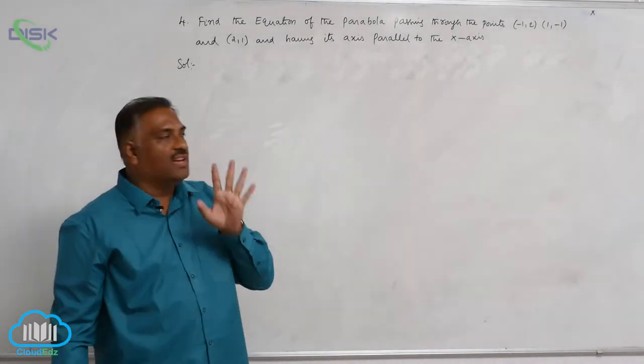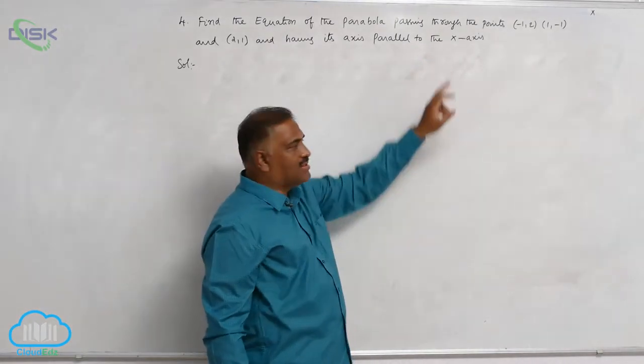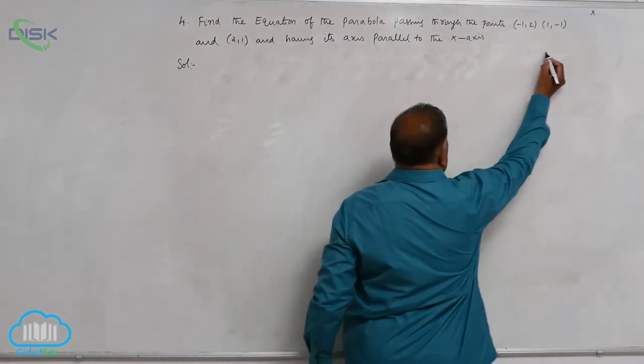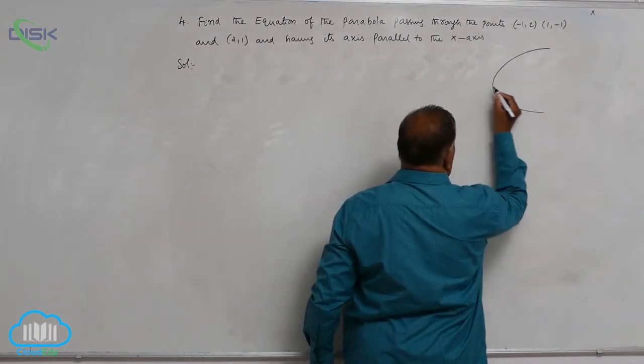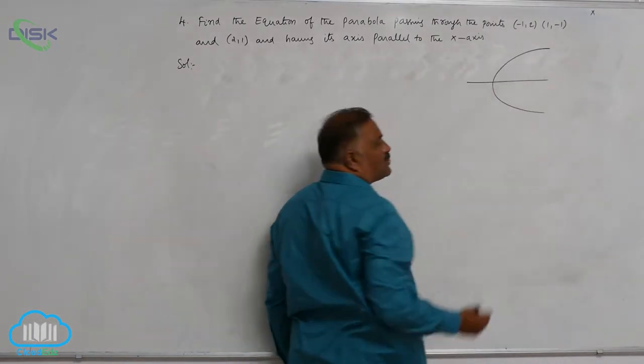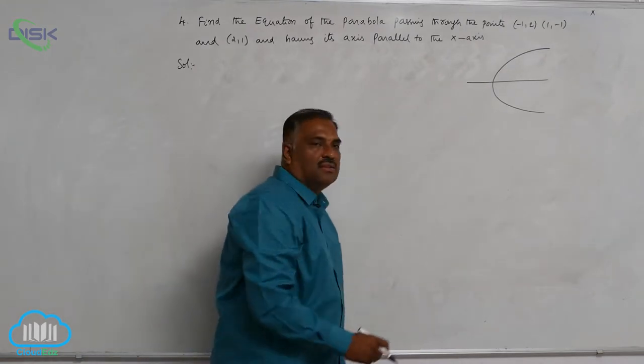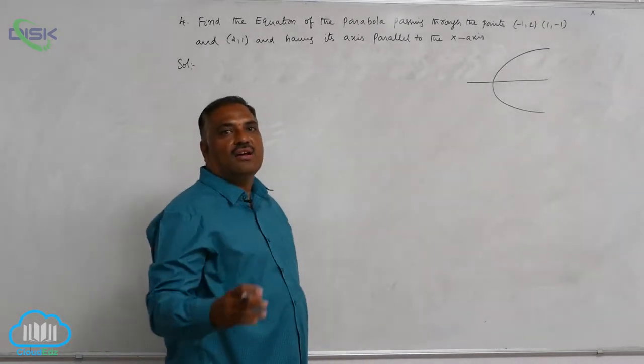Now the key word here is parallel to the x-axis. In general, parabola axis is parallel to x-axis means it will be like this only, or it can be either right-handed or left-handed parabola.